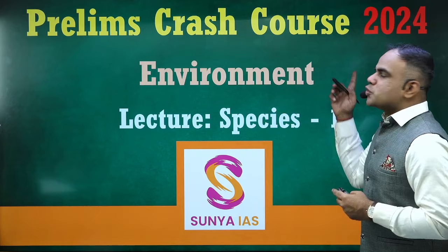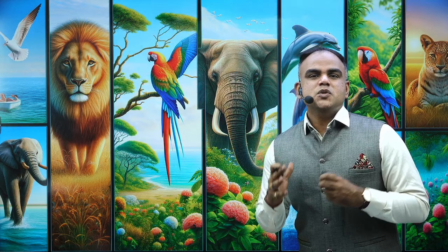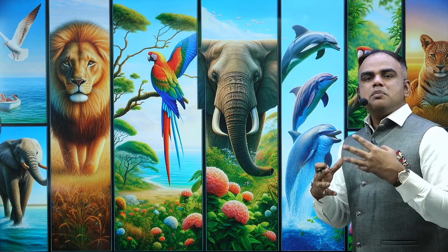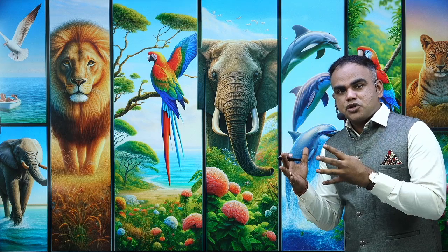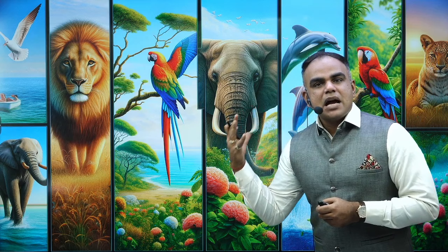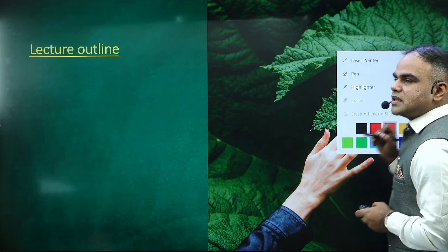Hi everybody, welcome to Environment Prism's crash course for 2024. Today we will be talking about species. This is going to be an extensive three-part lecture where I will cover unique behaviours of species, their habitat, their destruction, and why there is a need for conservation efforts. We will be covering a lot of diversity when talking about species.